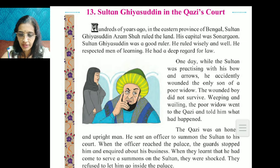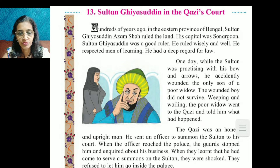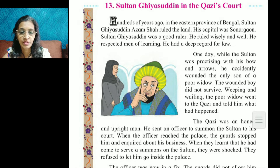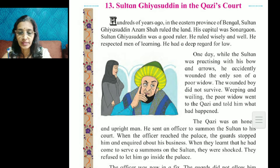Sultan Giyasuddin in the Kazi's Court. Hundreds of years ago, in the eastern province of Bengal, Sultan Giyasuddin Azam Shah ruled the land. His capital was Sonargaon.